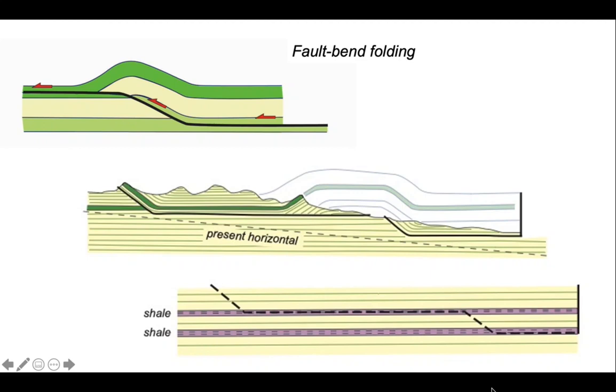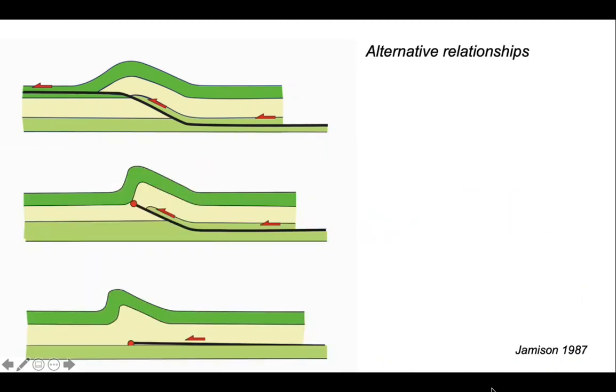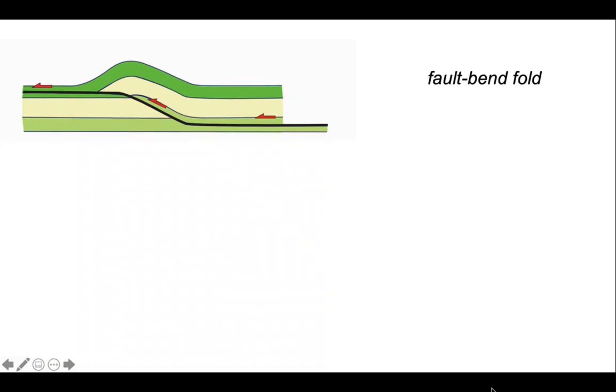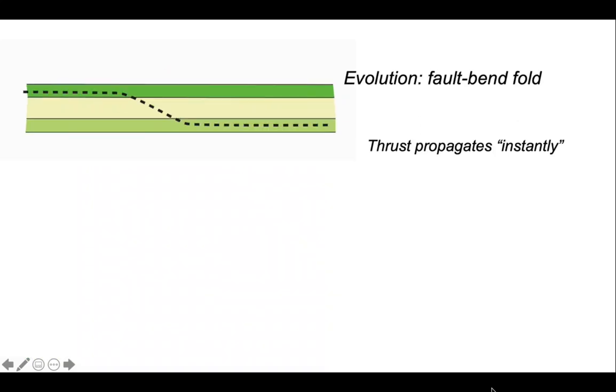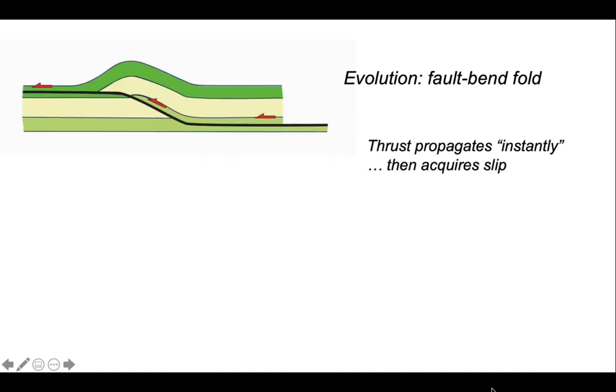But there are alternative models as well. And here they are represented in a diagram originally done by Jamison in the 1980s. Let's think about how these develop. So a fault bend fold works because a thrust propagates effectively instantly through a layered sequence and then it moves. So we have a particular behavior in terms of localization for the fault. It localizes and then slips. As a consequence, it creates a ramp anticline, an anticline in the hanging wall, a fault bend fold.